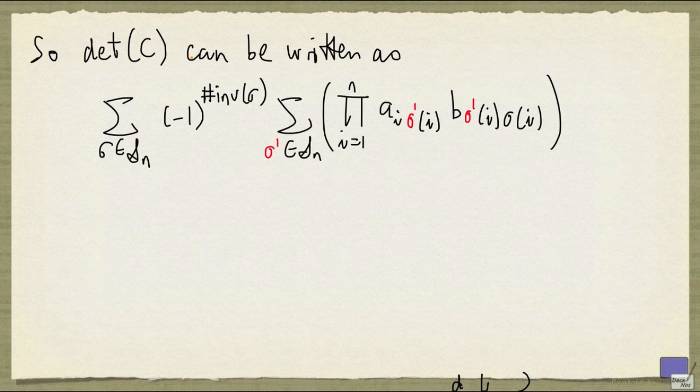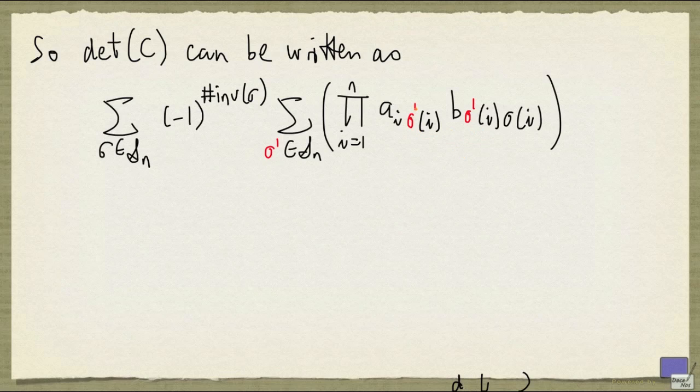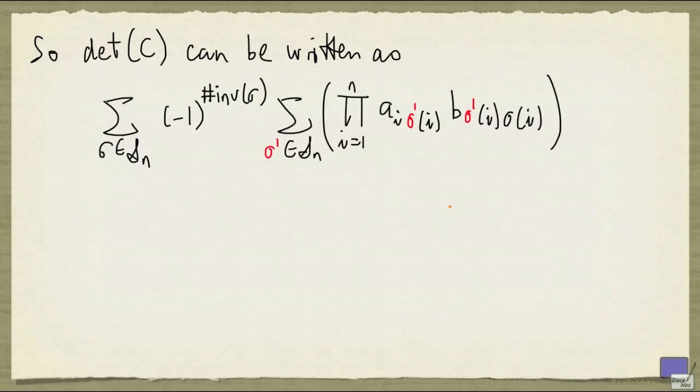So what that means is the determinant of C can be written as follows. This is the same as before, whereas the ki's are now represented by a permutation sigma prime. So this is now the expression that we want to work with, and we will try to simplify this expression in the next video. Thank you.